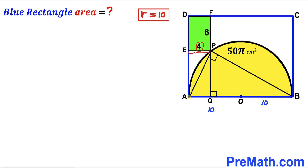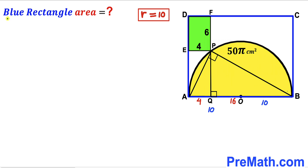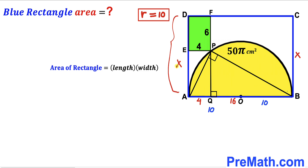We can see segment EP is 4, so segment AQ is 4 as well. The full diameter AB is 10 + 10 = 20 cm. Since AQ is 4, segment QB is 20 − 4 = 16. We want the area of blue rectangle ABCD. The length is 20 cm, but the width is unknown, so let's label it x.